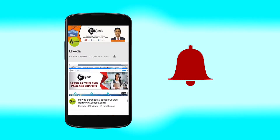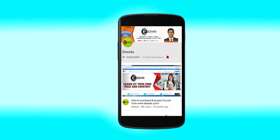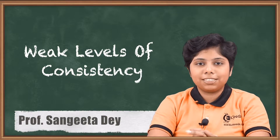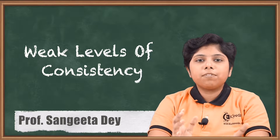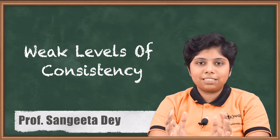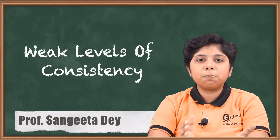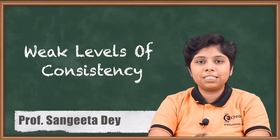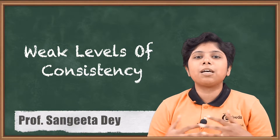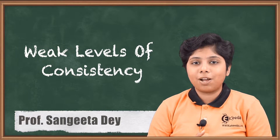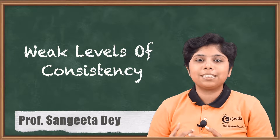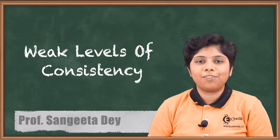Hello friends, today we will talk about some weak levels of consistency. Till now we have discussed about isolation levels like serializability, repeatable read, read committed, and read uncommitted. Now we will talk about some weaker levels of consistency rather than serializability, and we will define all these consistency levels elaboratively.